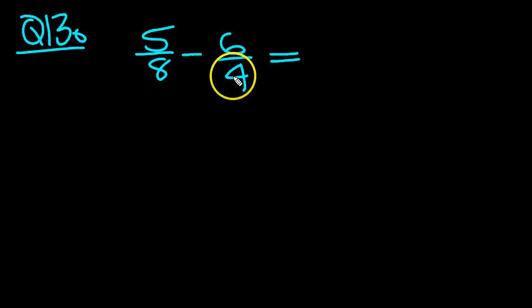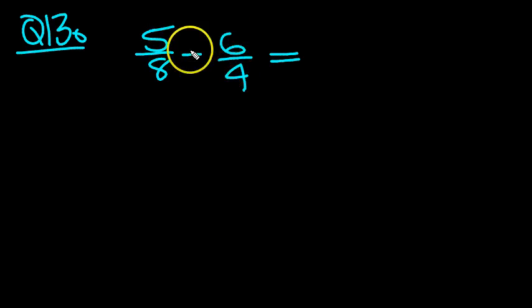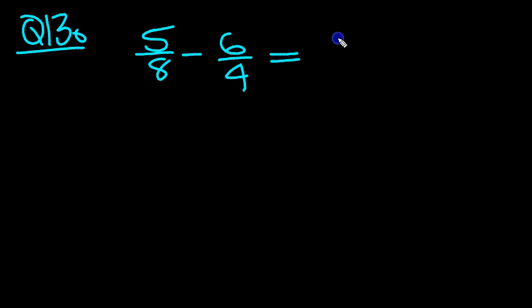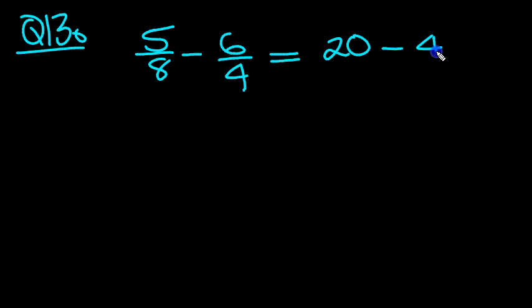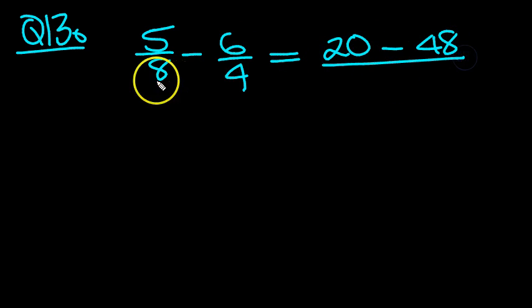5 eighths minus 6 fourths. So cross multiply: 5 fourths of 20 minus 6 eighths of 48, all divided by 8 fourths of 32.